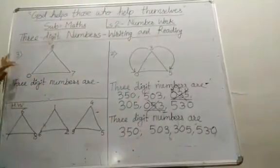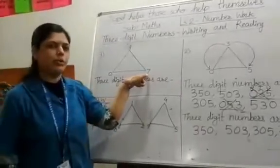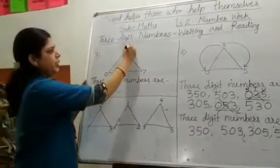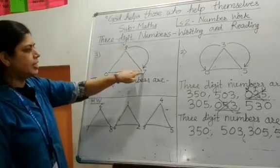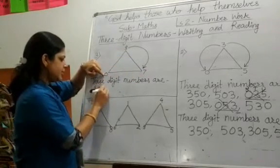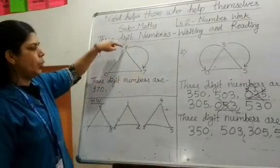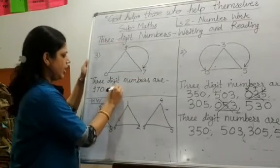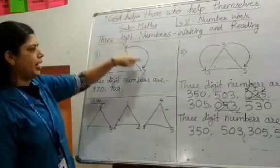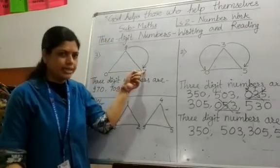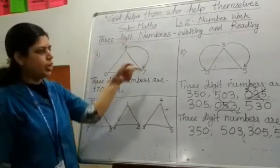Now see the third example. A triangle is there and the 3 numbers are 9, 0, and 7. Again we have to make 3-digit numbers. As per our method, first move in a clockwise direction. Starting from 9, we get 9, 7, 0 — means 970. Second number starting from 7: 709. Third number starting from 0: we get 0, 9, 7 — which is again only 97, a 2-digit number, so no need to write it. We get only 2 numbers by moving in a clockwise direction.